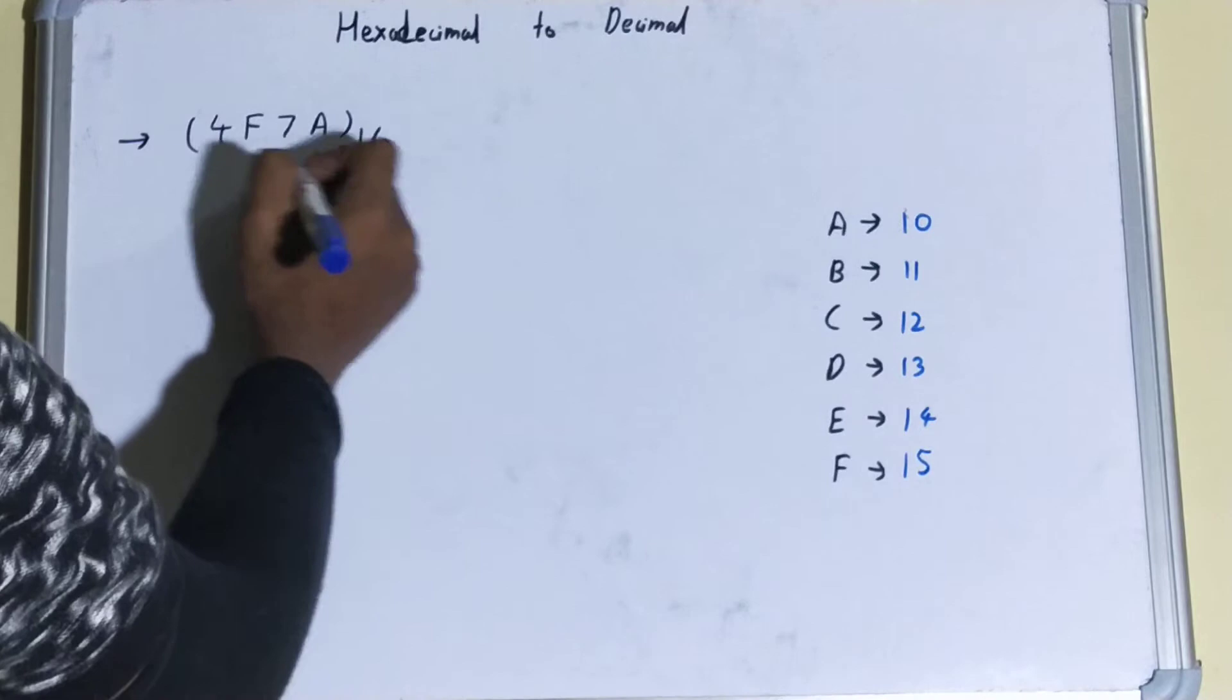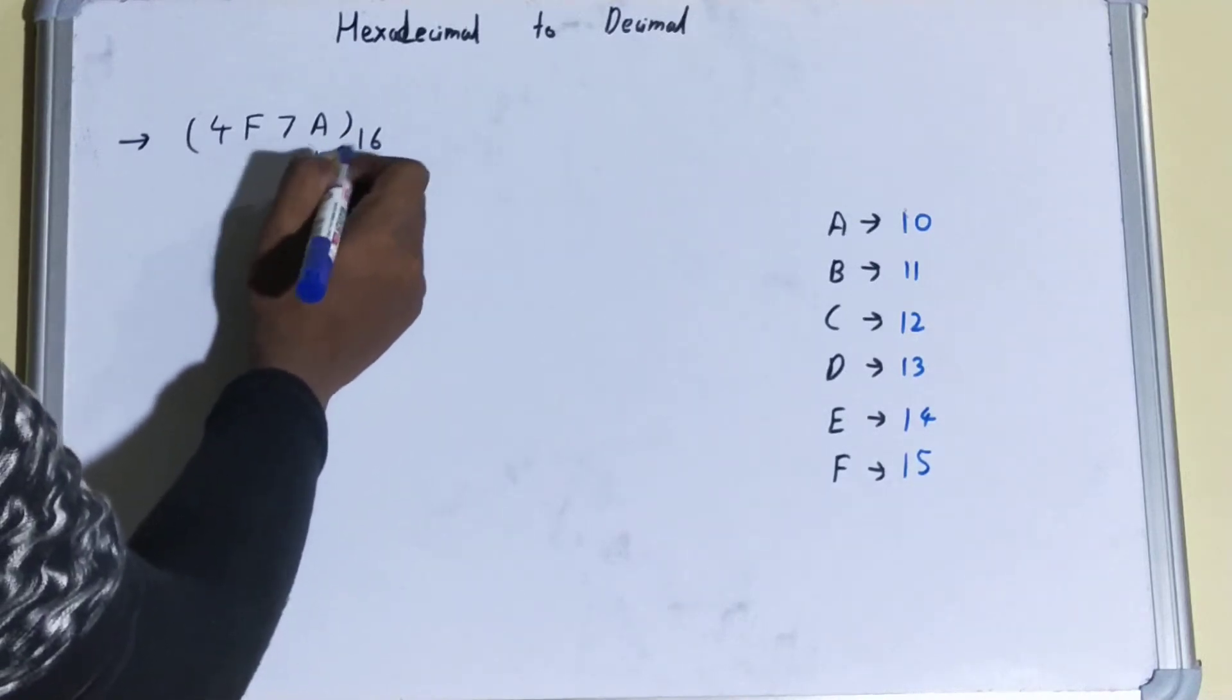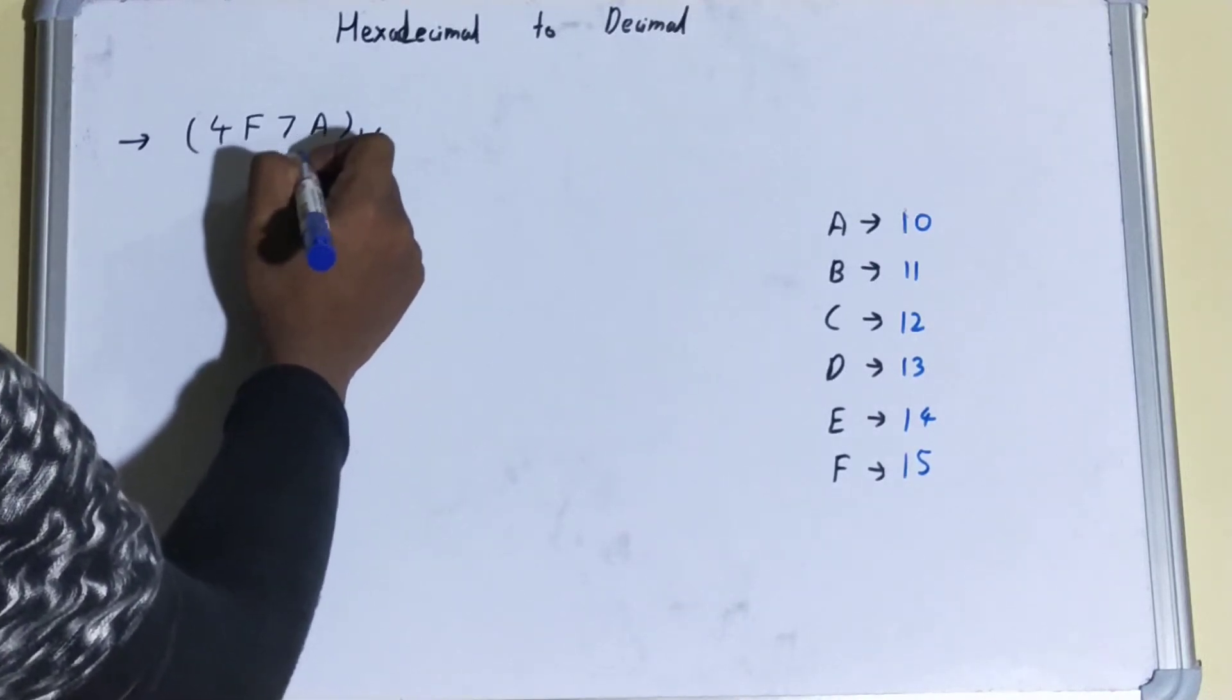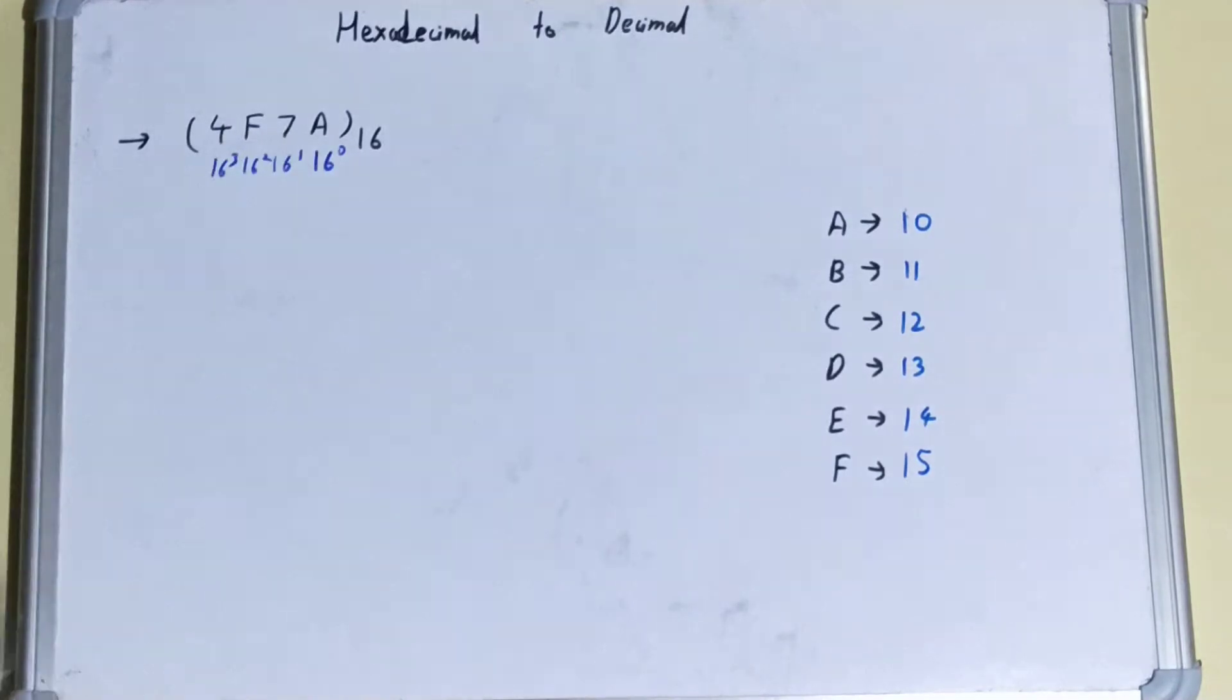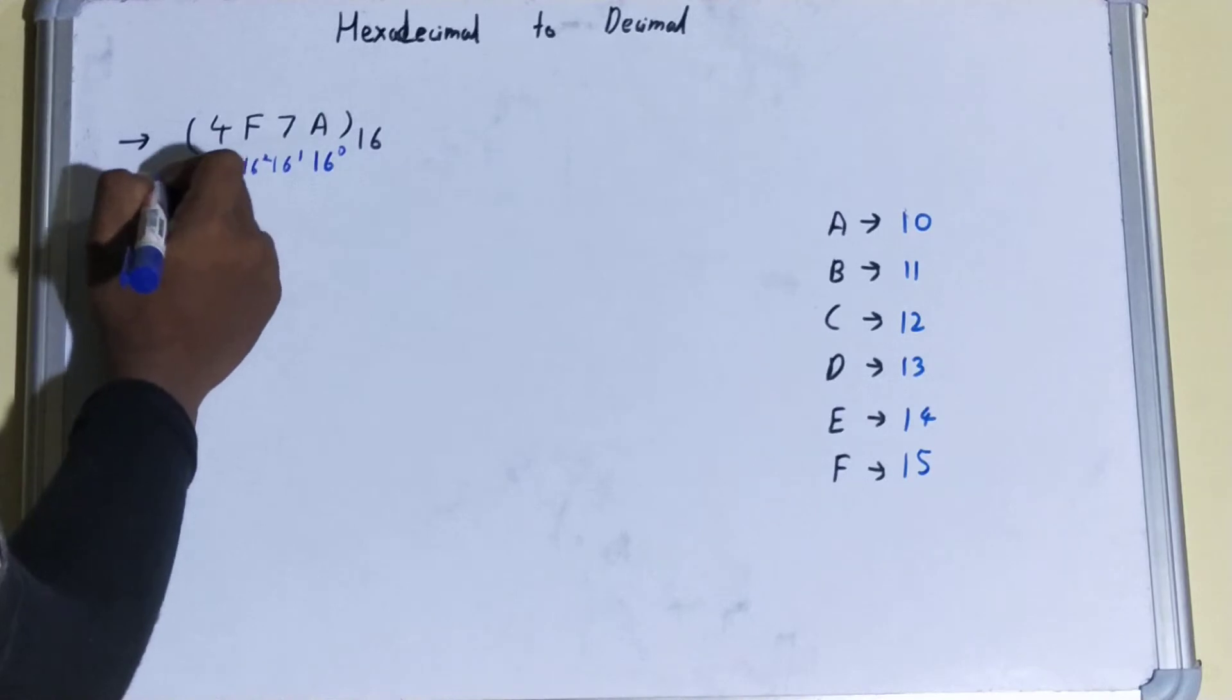Then 16 raised to power 1, 16 raised to power 2, and 16 raised to power 3. And we'll go on like this as the number increases.